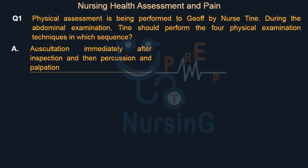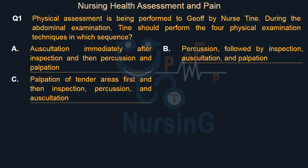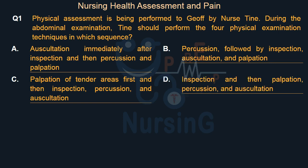Option A: Auscultation immediately after inspection, and then percussion and palpation. Option B: Percussion, followed by inspection, auscultation, and palpation. Option C: Palpation of tender areas first, and then inspection, percussion, and auscultation. Option D: Inspection, and then palpation, percussion, and auscultation.